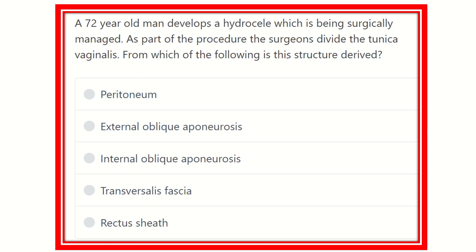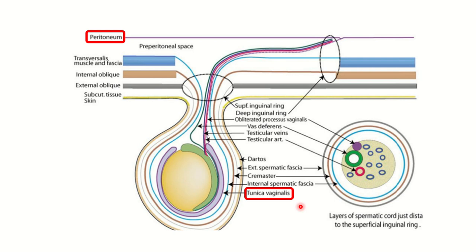We need to find out which structure the tunica vaginalis is derived from — we have to find out its source. Looking at the layers of the scrotum from outside in: first is the skin, then subcutaneous tissue which lies most superficial, then the dartos muscle, then the external spermatic fascia, and then the cremaster muscle and fascia.